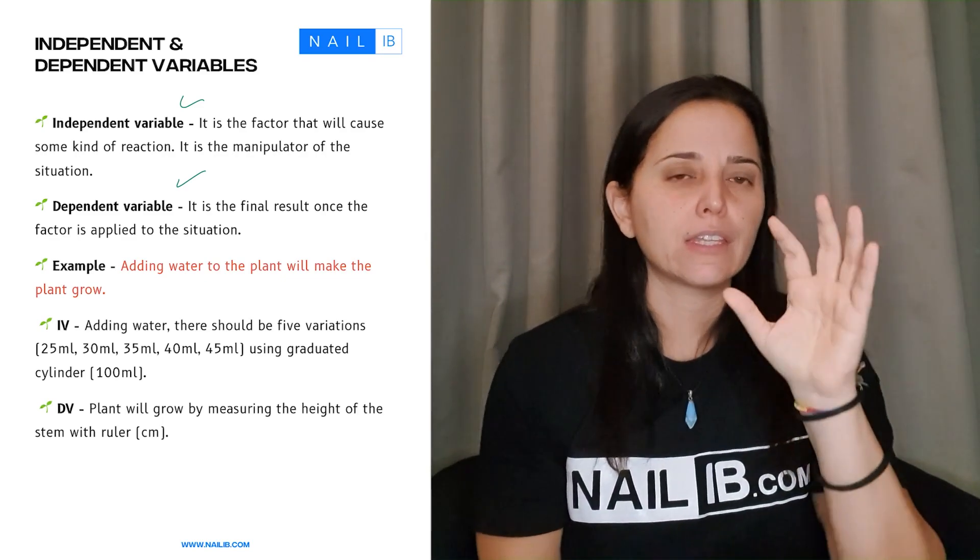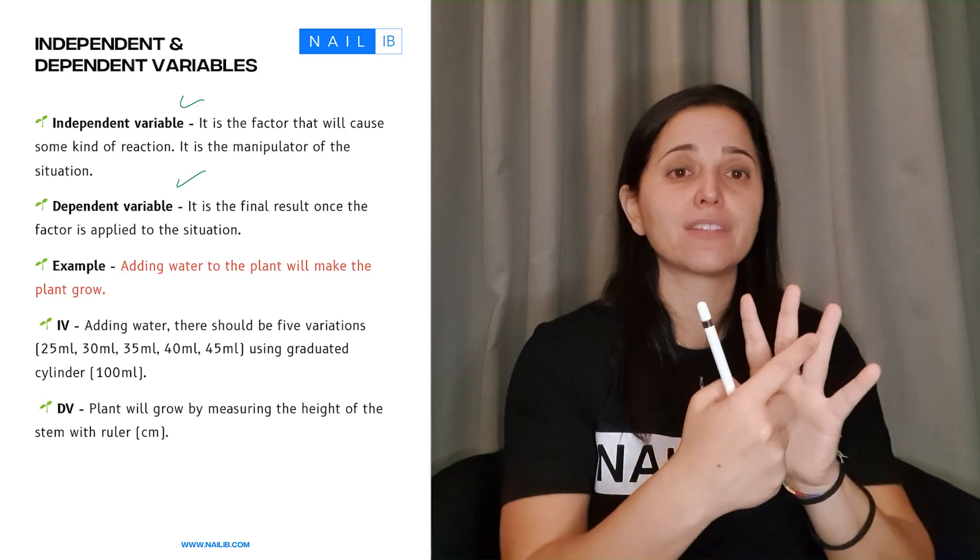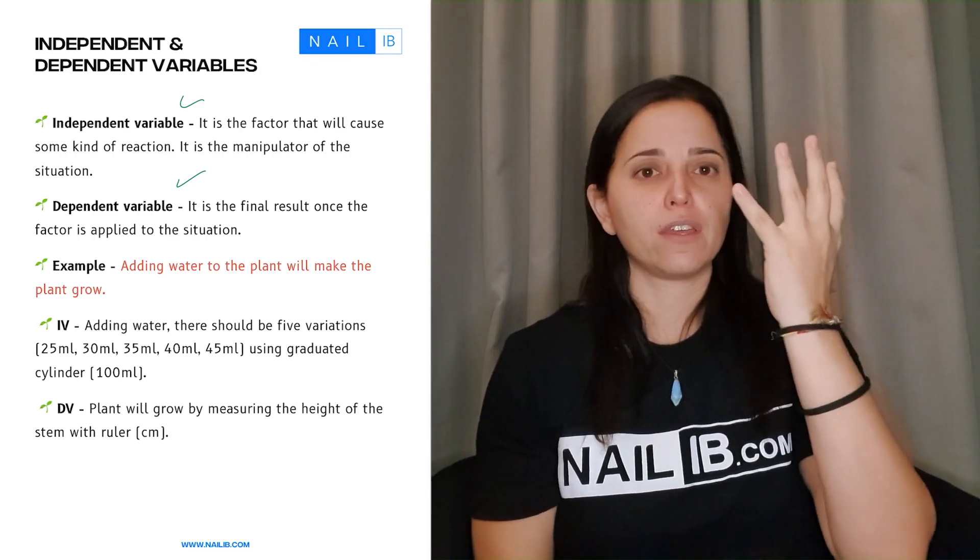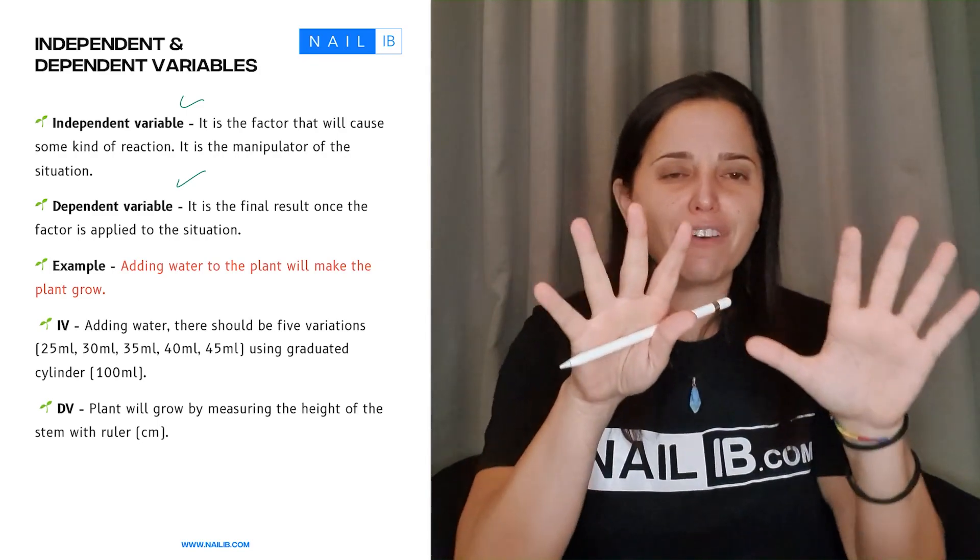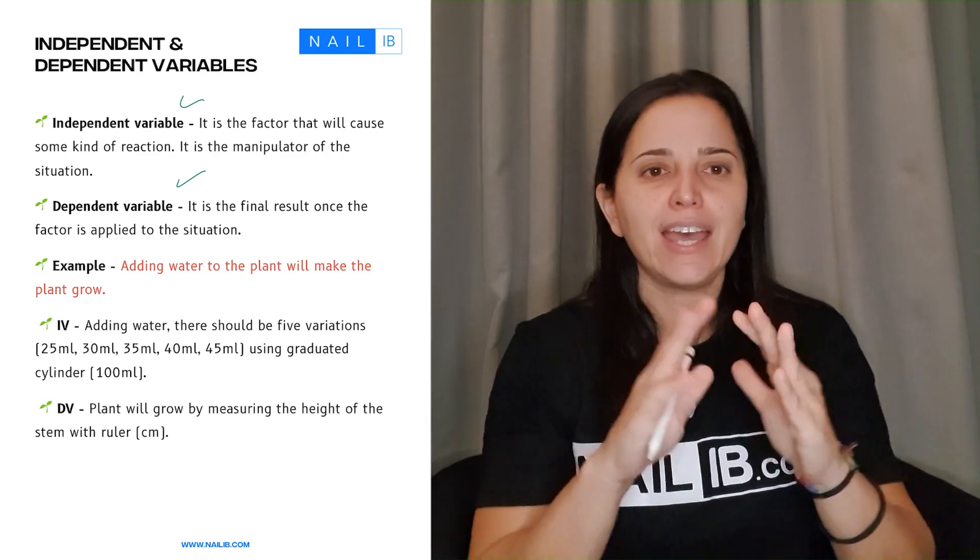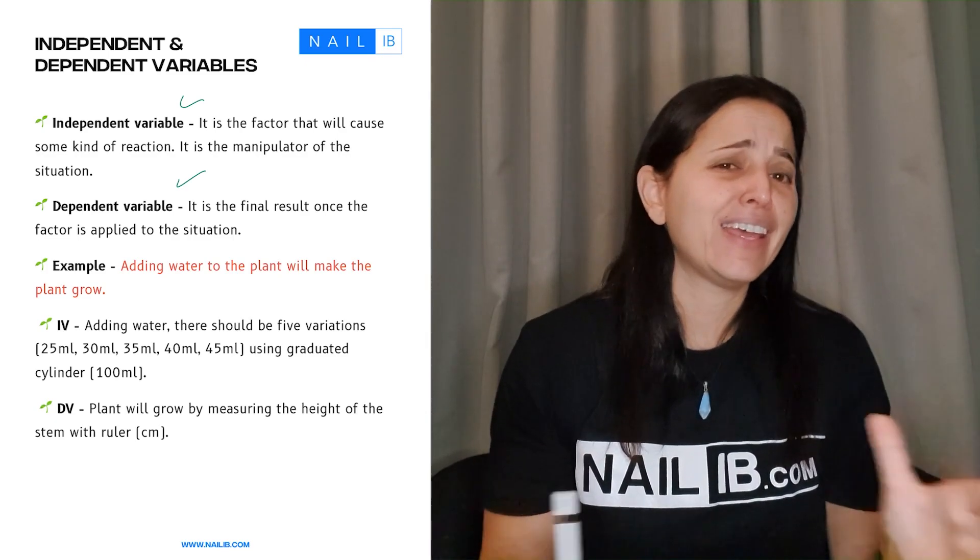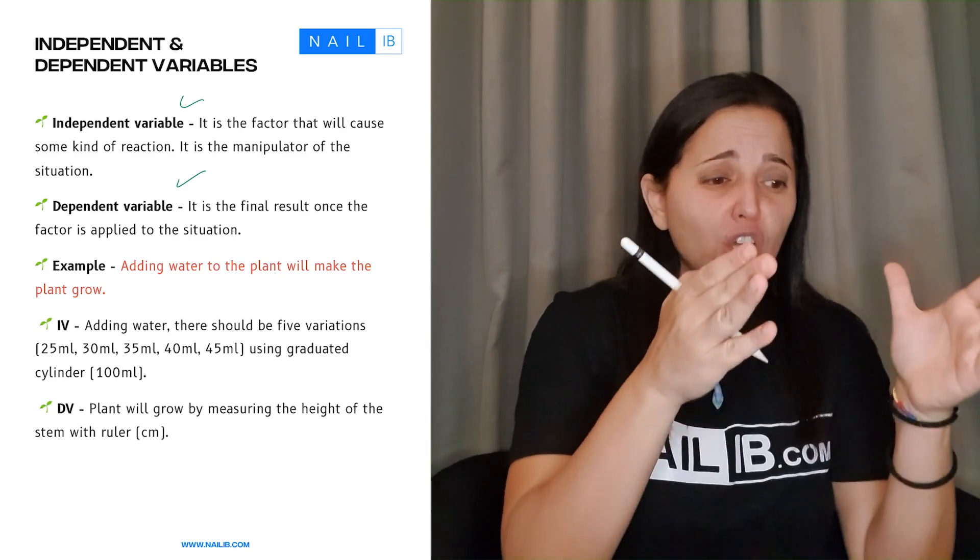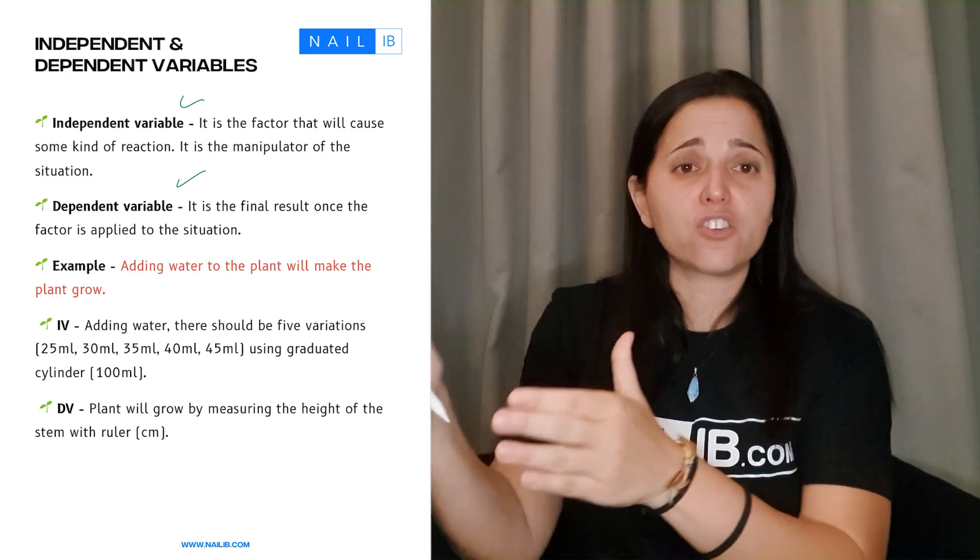But here's a very important thing. Variations have to be in increments that are good. So like I said it's 5, 10, 15. There's a five in difference. Don't use 13, 14.5, 16. That kind of variation is bad and the lab results will be bad. So make sure there is a good range between these variations.